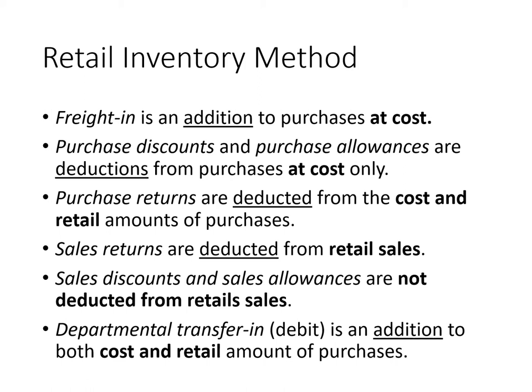Sales returns are deducted from retail sales only, since they are not part of the computation of goods available for sale. Sales discounts and sales allowances are also not included in the computation of goods available for sale. For the purpose of computing the cost ratio, they are not considered.